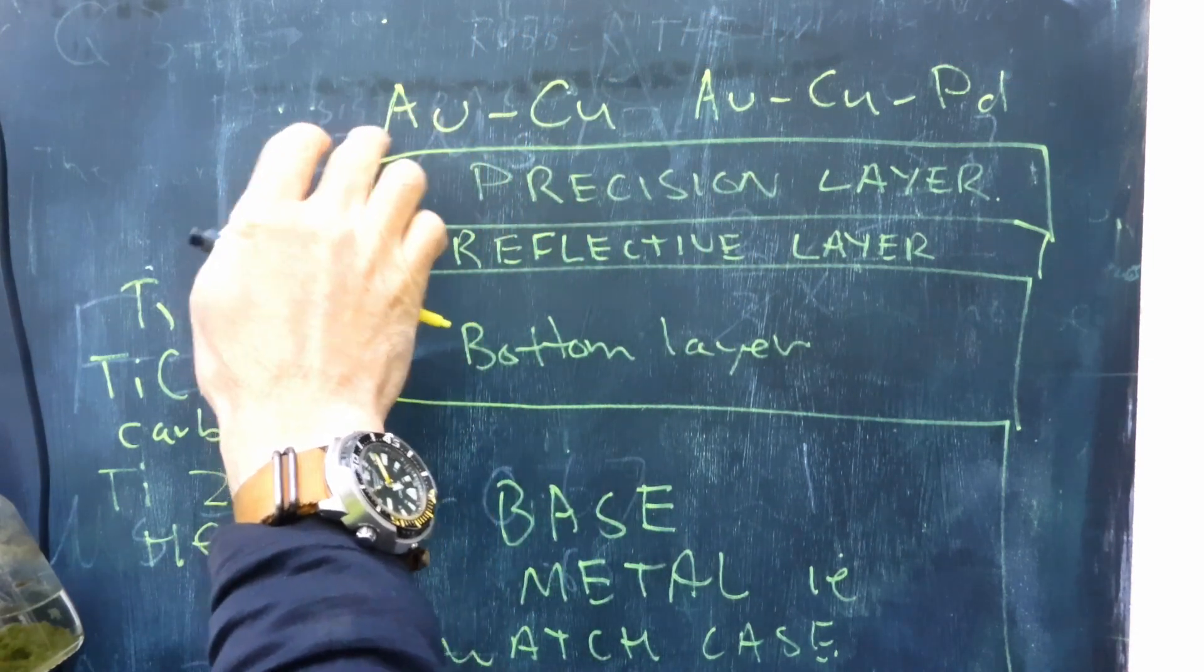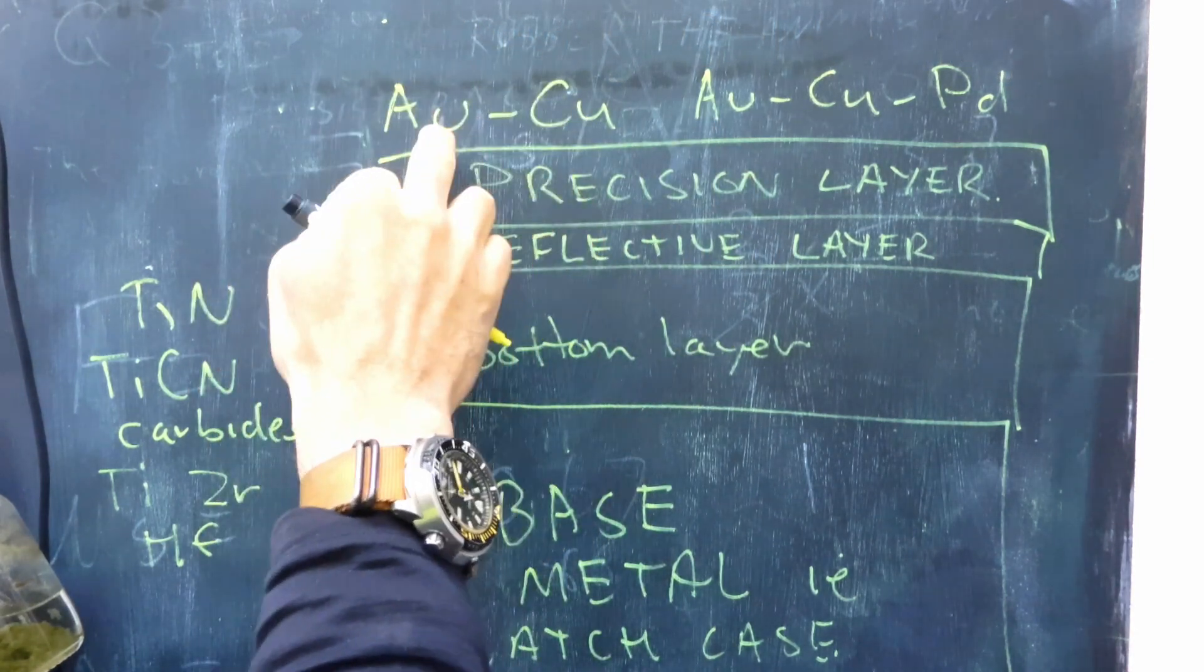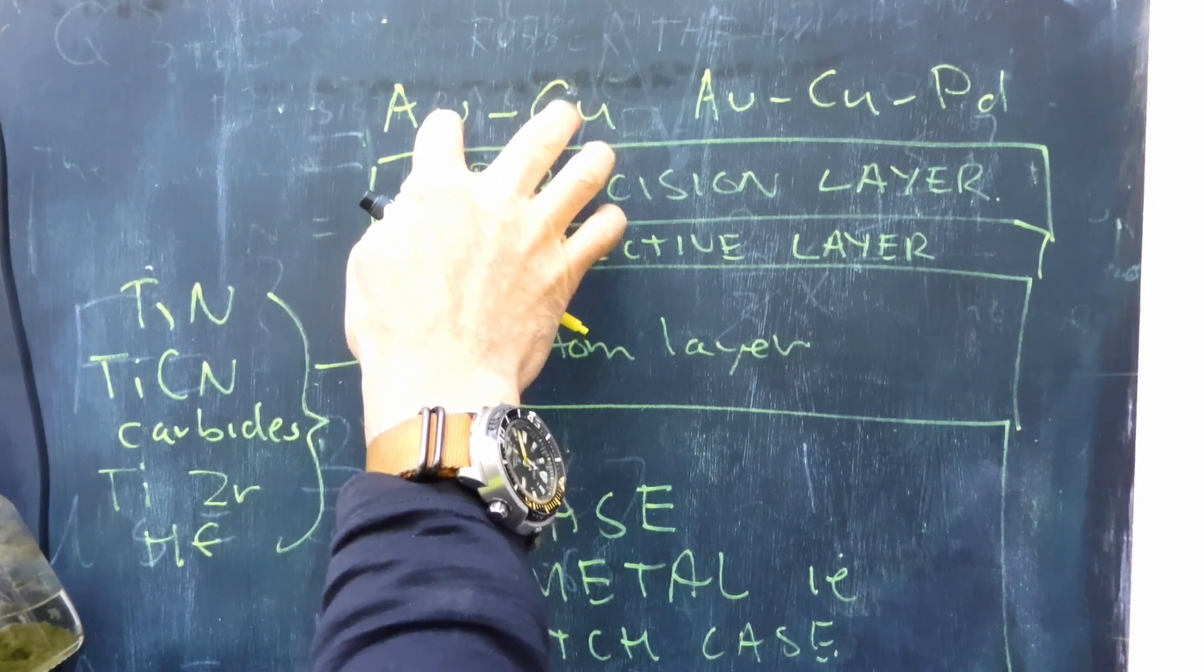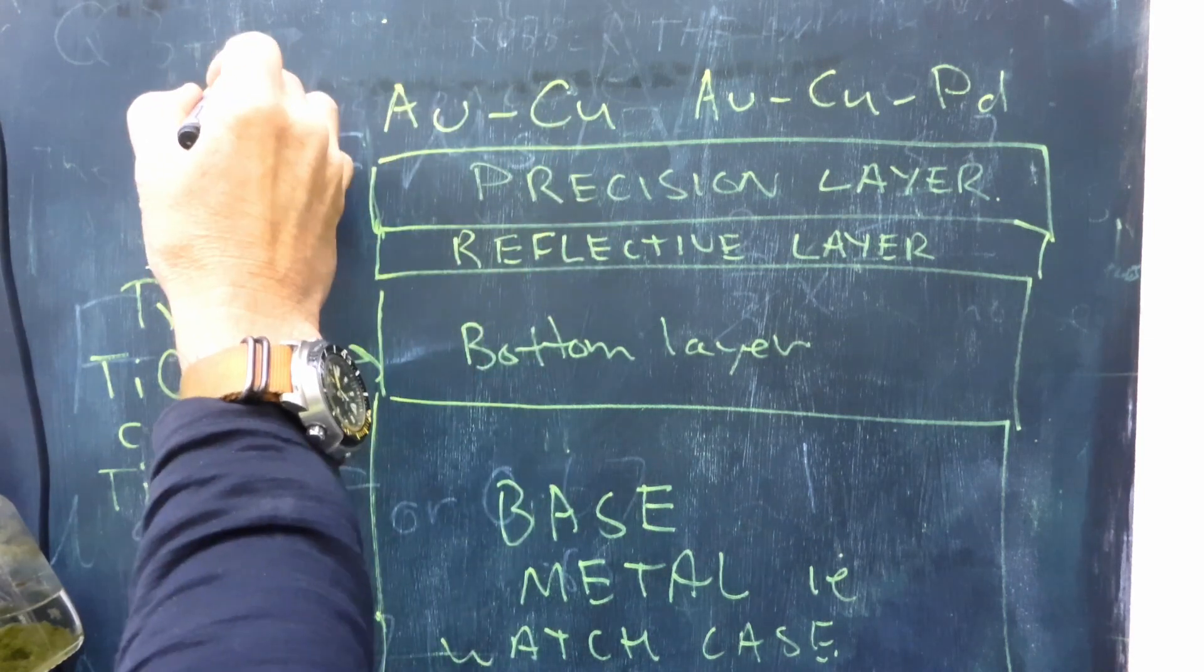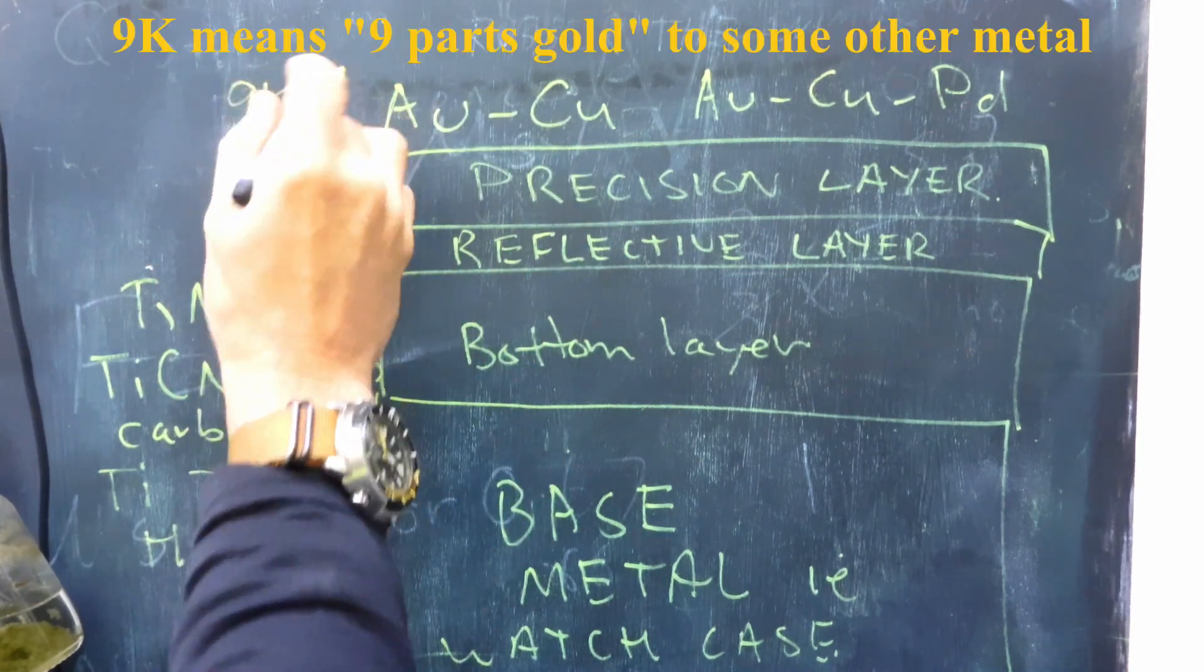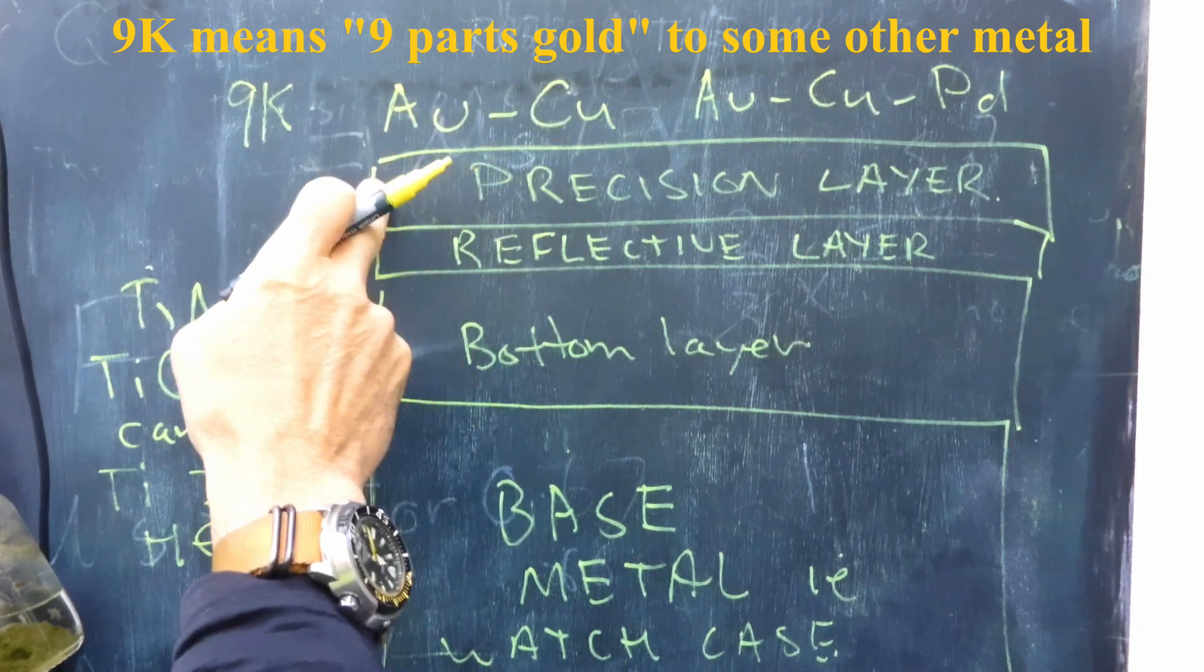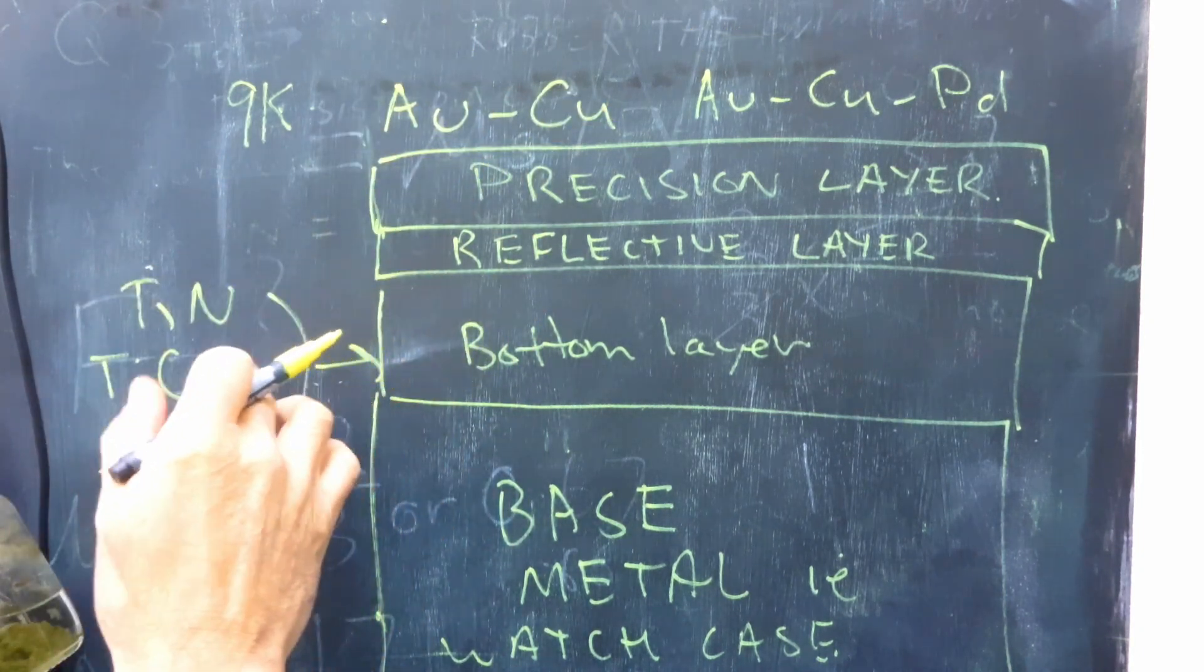But that's where the gold comes in. You may notice here that gold-copper is a common one. You can have gold-copper alloys of different combinations. For example, nine carat gold is not pure gold, it's a gold alloy with copper. So that's what goes into the precision layer.